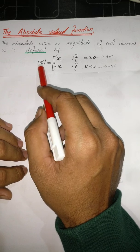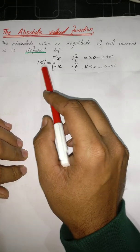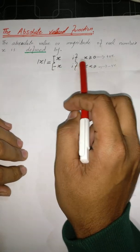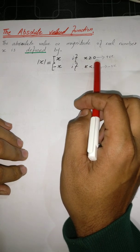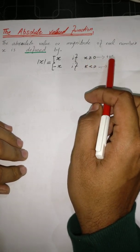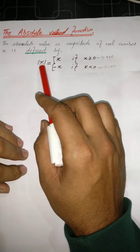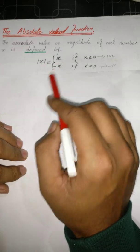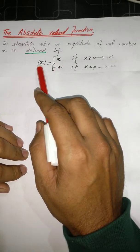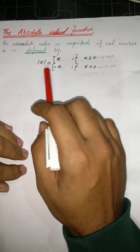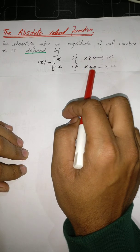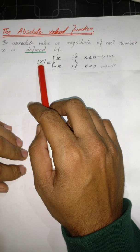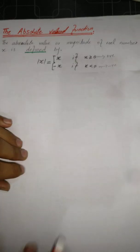This notation we also read as mod of X or modulus of X. So mod of X equals X if X is greater than or equal to 0, meaning positive values — if the value inside the mod is positive, then the modulus value is X. If the value inside the mod is negative, whenever X is less than 0, then it gives us the negative of the value inside the mod.